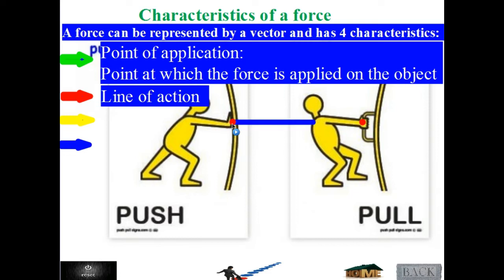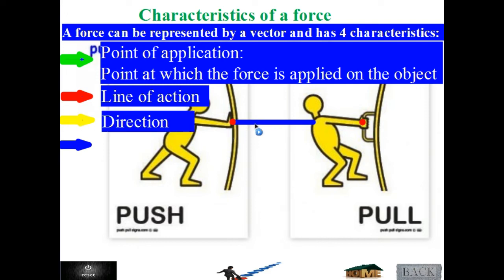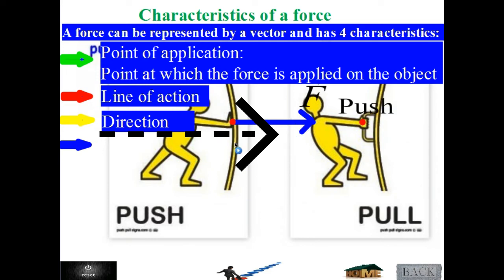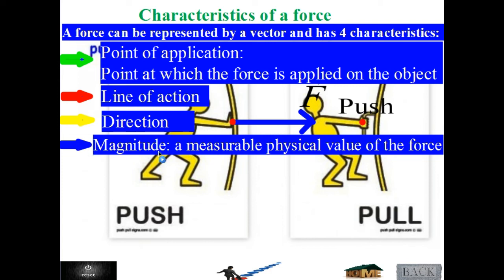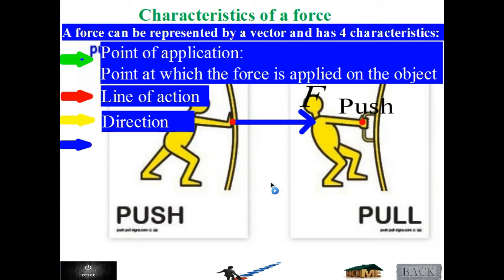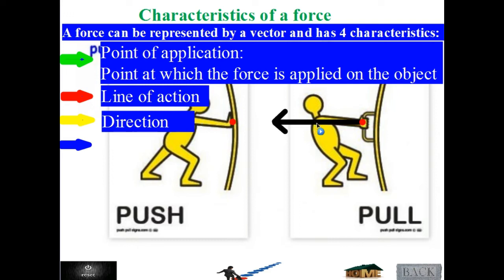The second characteristic is line of action, which is horizontal — he is trying to push the door horizontally. The third one is direction: he is pushing the door to the right, so this is the pushing force. The last characteristic is the magnitude of the force — a measurable physical value of the force that gives us the strength of the force. For the pulling force, the line of action is also horizontal, and the direction is to the left because the man is trying to pull the door to the left.